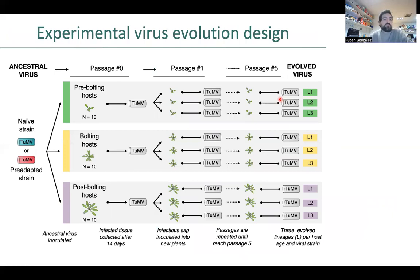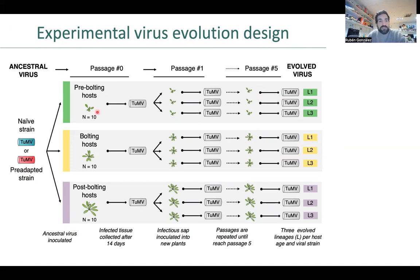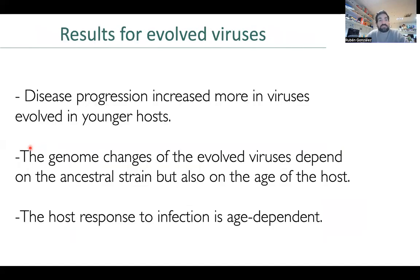So with this in mind, we decided to take the naive strain and the pre-adaptive strain and evolve them in the host in the three different stages. We have done that for five experimental evolutionary passages, obtaining three lineages for each stage and for each virus strain.